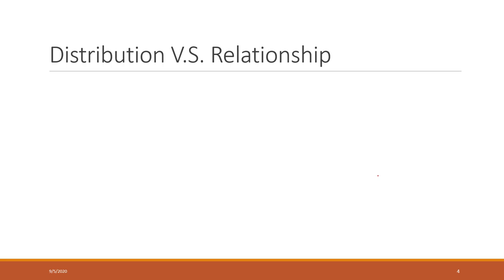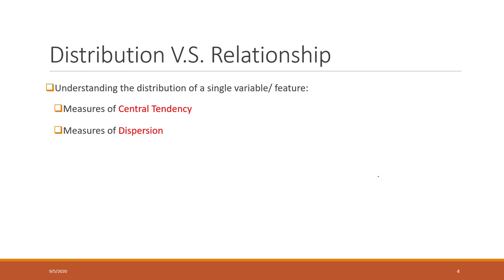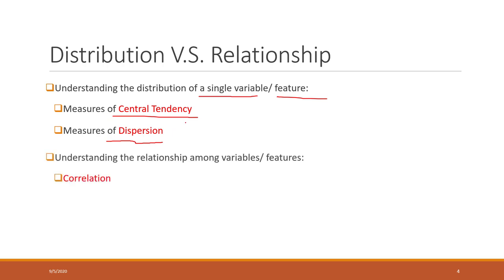Let's talk about relationships and distribution. To understand the distribution of a single variable, or single feature, or single column, we normally use two measures. The first is called the measure of central tendency, and the second is called the measure of dispersion. And if we want to understand the relationship among multiple variables or features, we can use correlation. Correlation can help us identify whether two variables have a strong correlation. You can also use regression, but we'll talk about that next week.